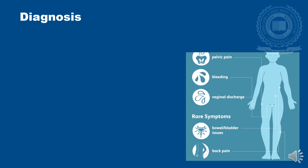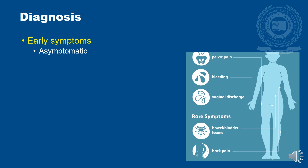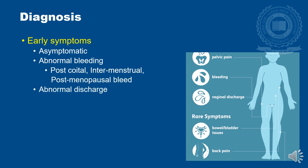Diagnosis of CA Cervix. Early symptoms: patients might be asymptomatic, so it is very important to examine the cervix in all reproductive-age women to pick up abnormal areas and take a biopsy before symptoms arise. Patients may present with abnormal vaginal bleeding — post-coital bleed, intermenstrual bleed, or post-menopausal bleed — or abnormal vaginal discharge that is blood-stained, dirty, or foul-smelling.